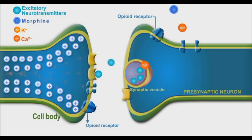These neurotransmitters cross the synaptic cleft and bind to their postsynaptic receptors, where they initiate cascades of reactions that mediate pain sensation.